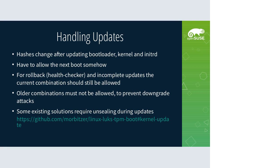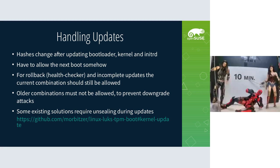A tricky issue is also preventing rollback attacks: we need to disallow booting older combinations of kernel and initrd. Otherwise you could purposefully downgrade them and attack the system using a vulnerability in an older kernel — for instance, copying the old kernel and initrd, waiting a year for a root vulnerability to go public, then installing the old kernel and initrd to boot successfully.